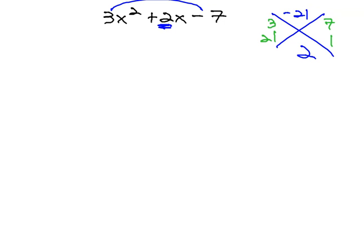There is no other way to multiply to 21, which means there's no other way to factor 3x squared plus 2x minus 7. If there is absolutely no combination that works, we say that the polynomial is prime and cannot be factored.